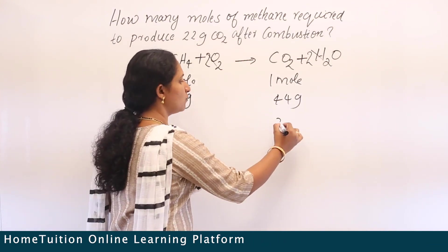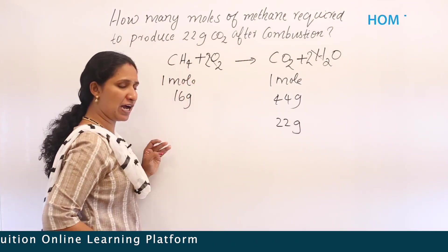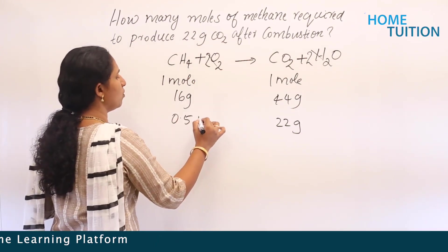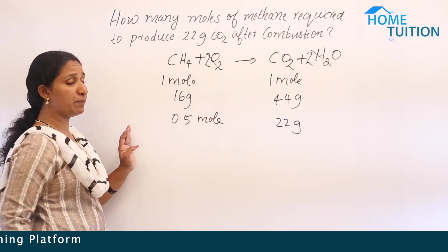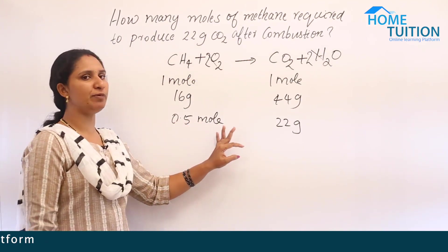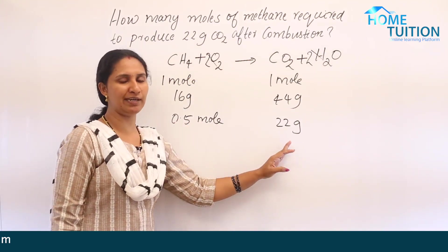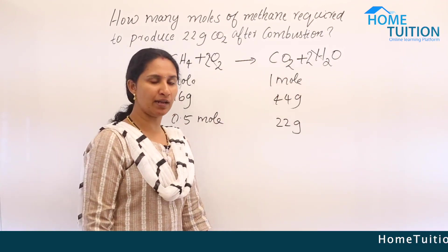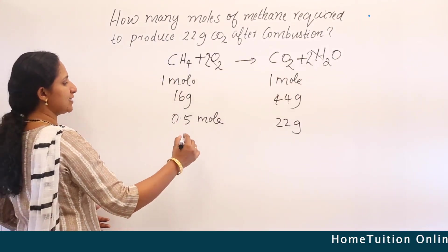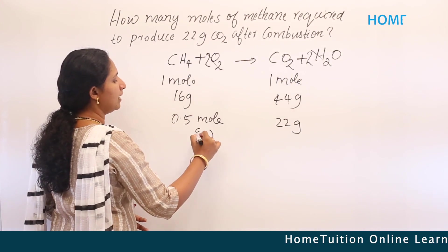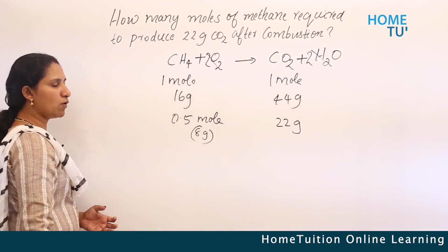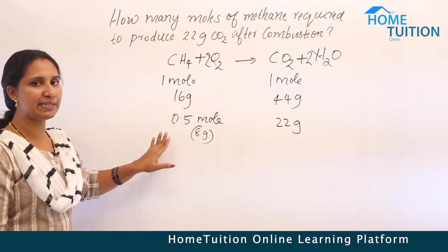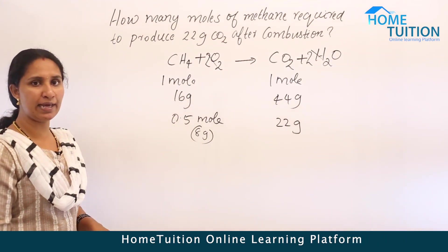For 22 grams of carbon dioxide, we need 0.5 moles of methane — half of the methane is needed to produce half of the carbon dioxide. In terms of grams, 0.5 moles of methane is 8 grams. Since 16 grams is one mole, 8 grams is half a mole.